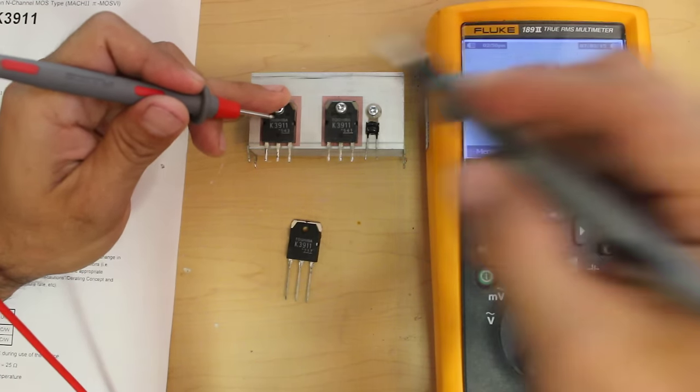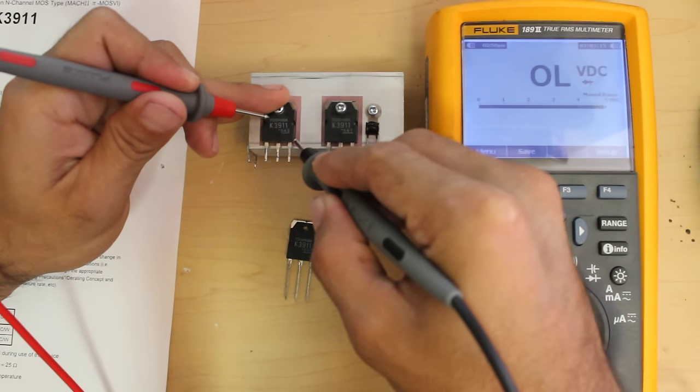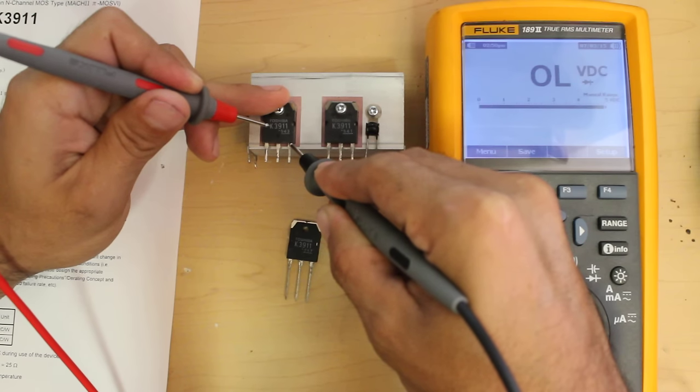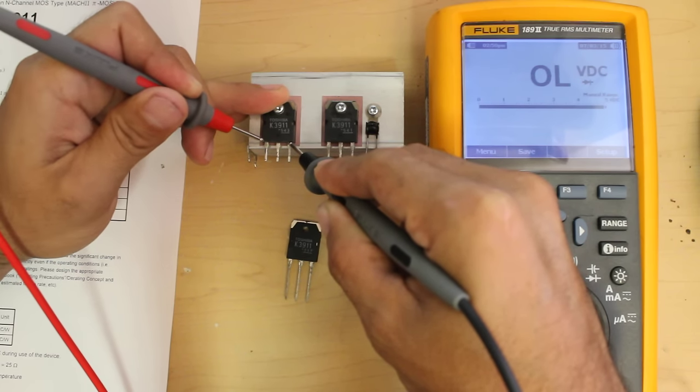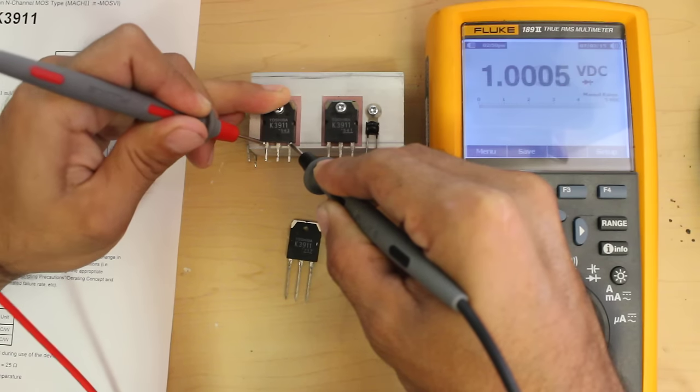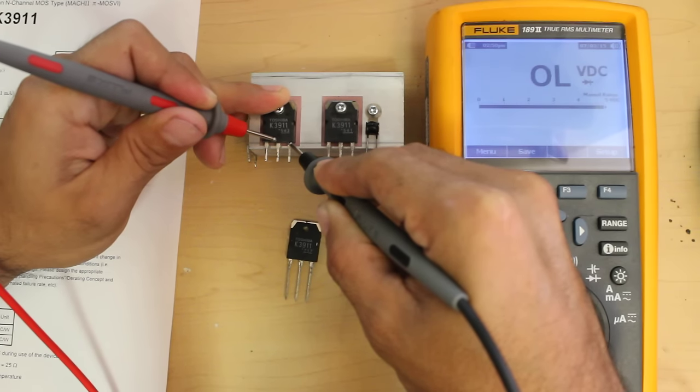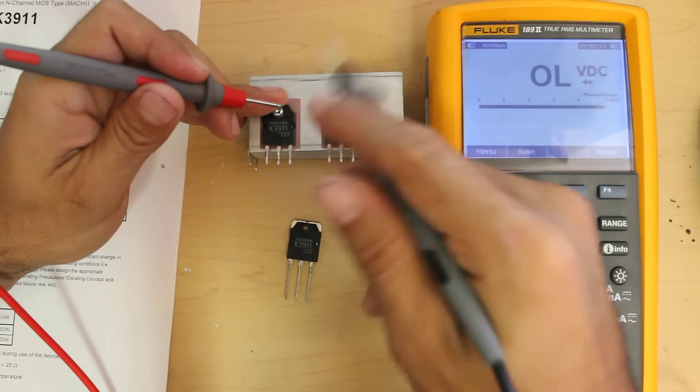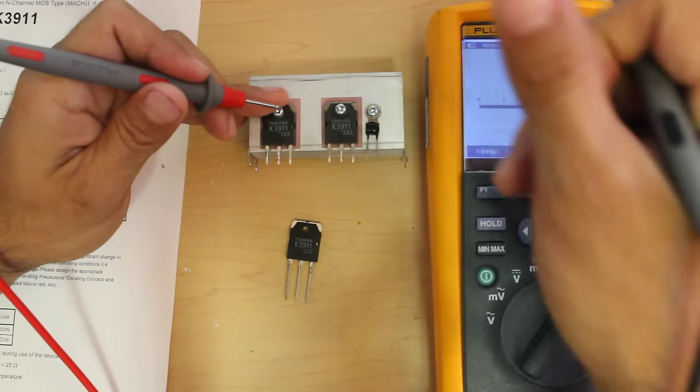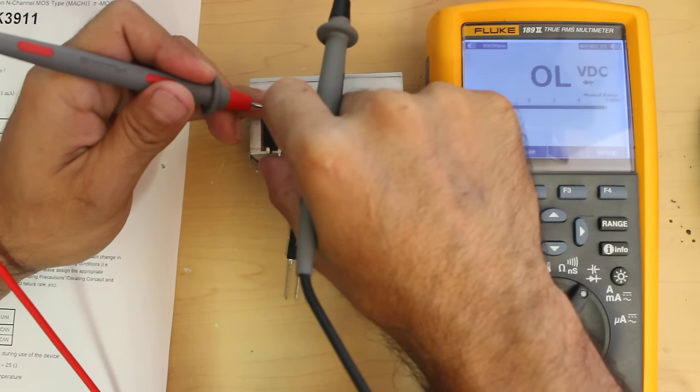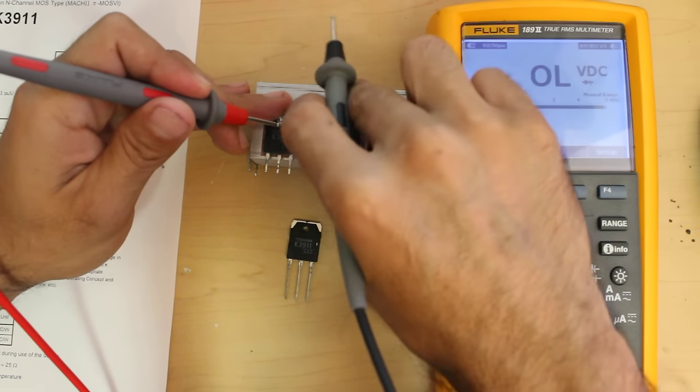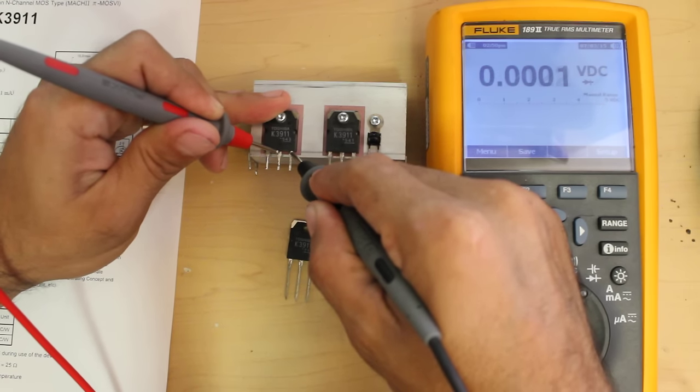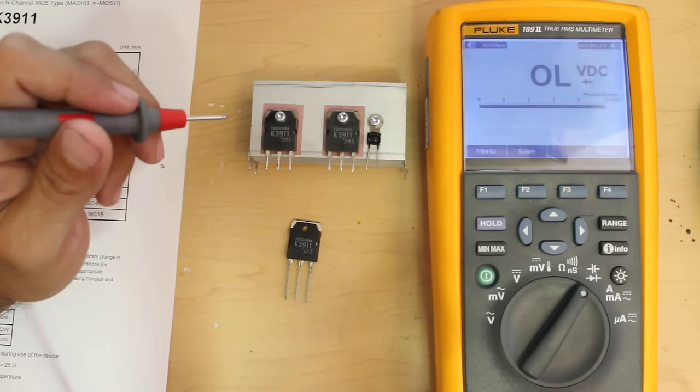To do that, we're going to put the negative lead to the source and touch the gate briefly with the positive lead, then touch the drain. If I touch the gate and the drain with my finger, we should be able to discharge the MOSFET and there should be no connection after that. Once again, this MOSFET is shorted.